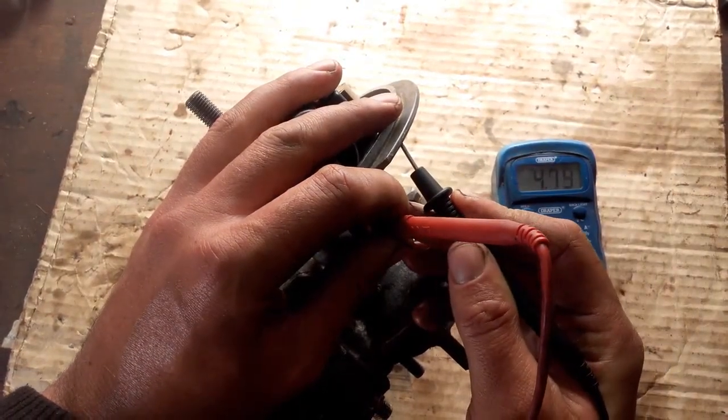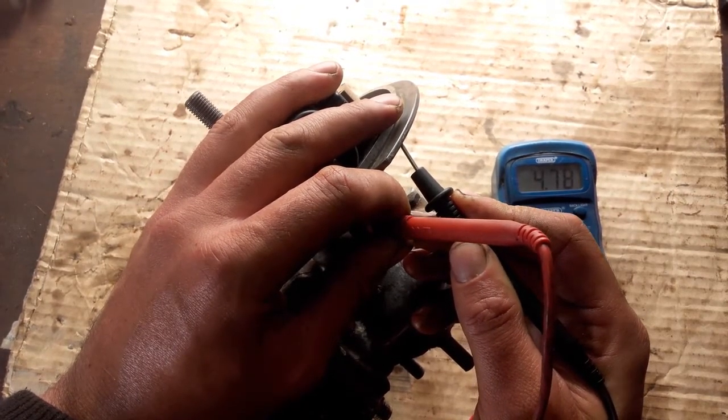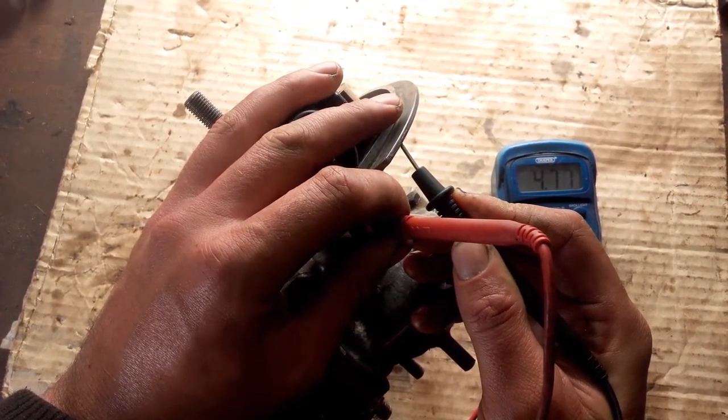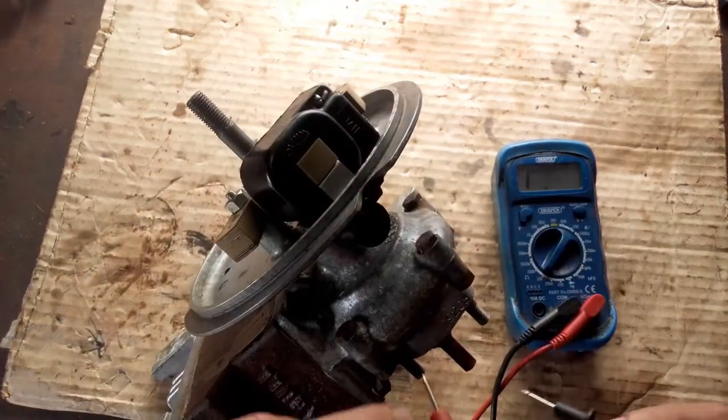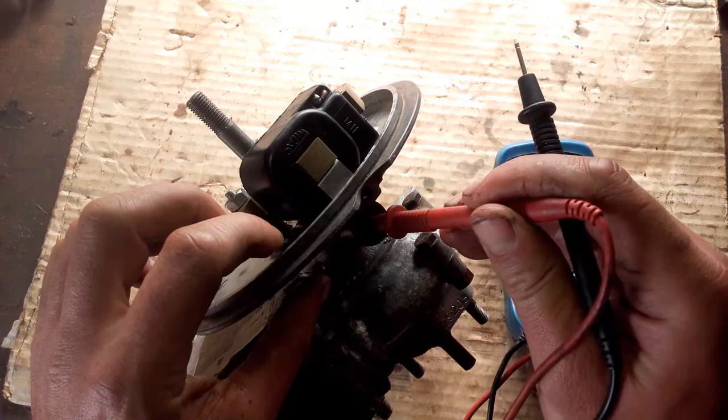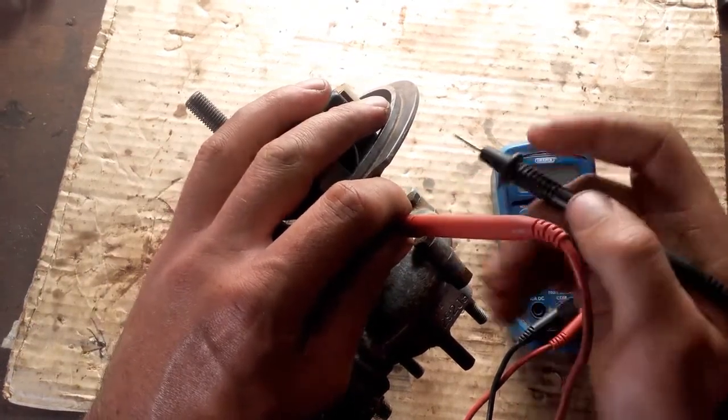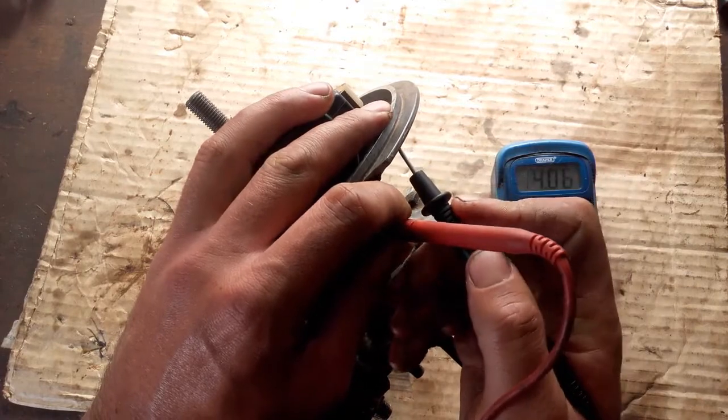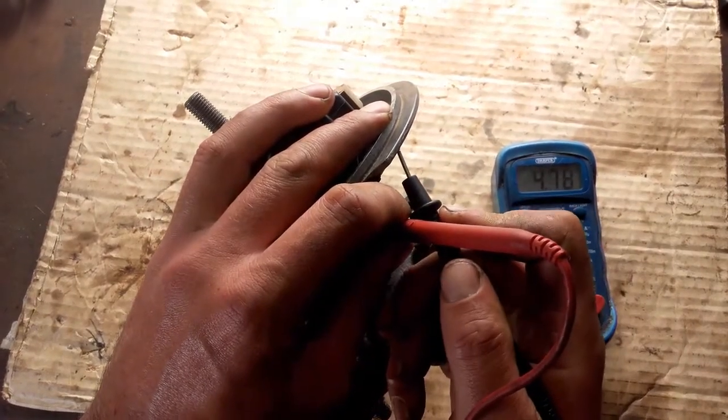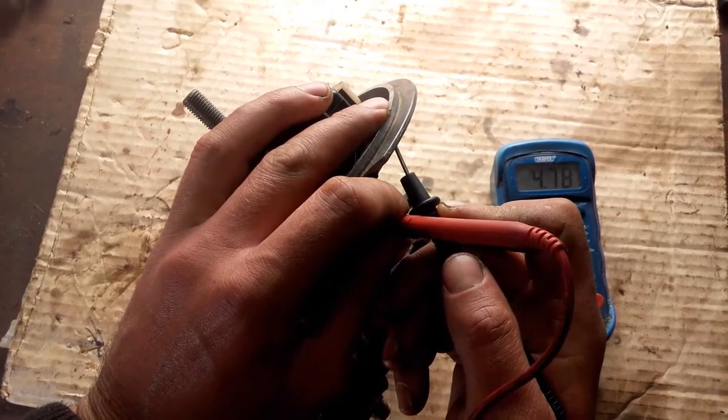And we're getting a reading there of 4.78, so this coil is absolutely perfect. So again, just get the tip, put your terminal onto the tip there to make sure it is dead center if you can, so you can push fairly hard on it, and anywhere then on the base plate, and you are getting a reading of 4.78.